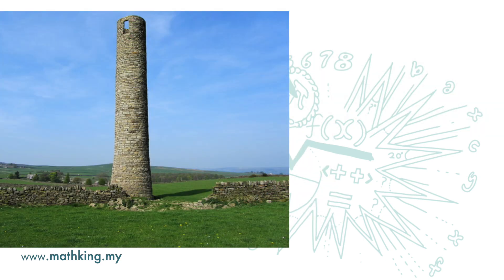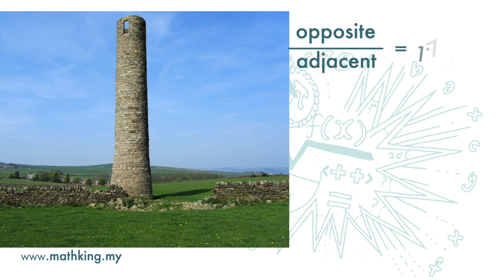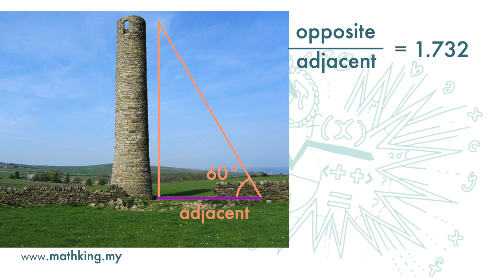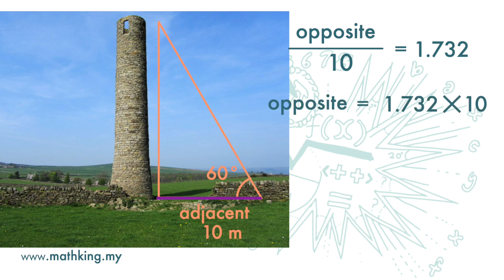Similarly, here we have a tower. If we want to know the height of the tower, with the knowledge that the ratio of the opposite side to the adjacent side of a 60 degree angle is 1.732, we need only to draw a 60 degree angle here. Measuring the length of the adjacent side is easy and we can calculate the height of the tower. If we measure the adjacent side and find it to be 10 meters, then the length of the opposite side is 1.732 times 10, which is 17.32 meters. This is the height of the tower.